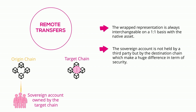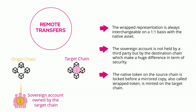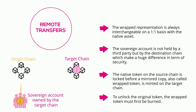This is similar to a lock-mint-burn-unlock bridging mechanism, with the difference that the sovereign account is not held by a third party but by the destination chain within the secured Polkadot ecosystem. As a quick reminder, when using this method, the native token on the source chain is locked before a mirrored copy — also called a wrapped token — is minted on the destination chain. To unlock the original token, the wrapped token must first be burned.